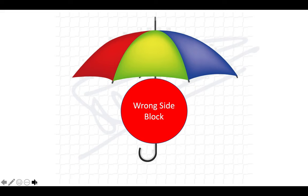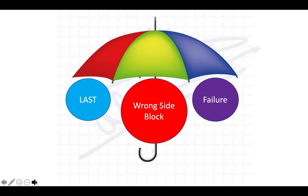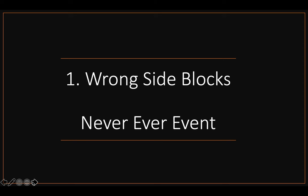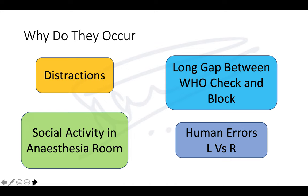One thing you don't want is a wrong side block. Another is local anesthetic systemic toxicity. Failures we will always have to accept. Wrong side blocks are never-ever events — you do not want that happening in your practice at all. They occur because of distractions, a long gap between the WHO checklist and the block, or social activity in the anaesthesia room where people are chatting and causing distractions.